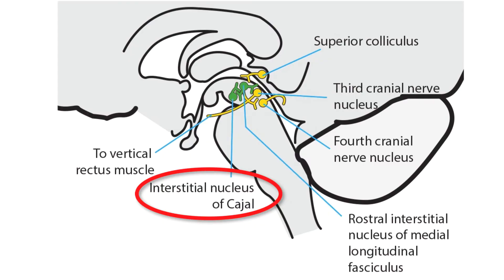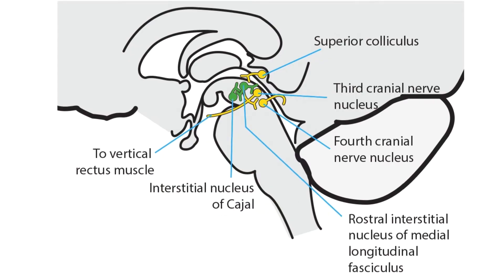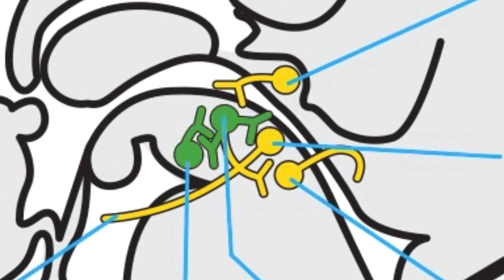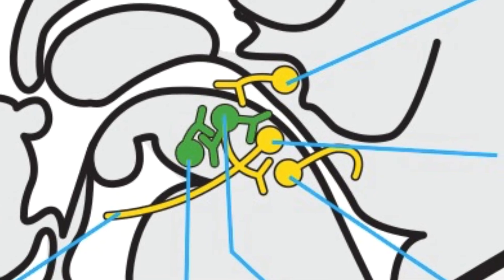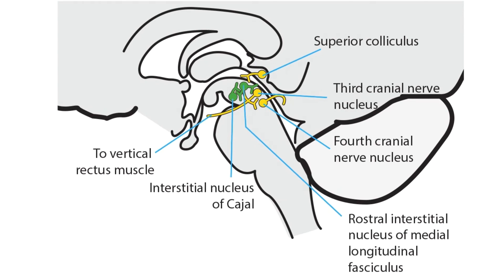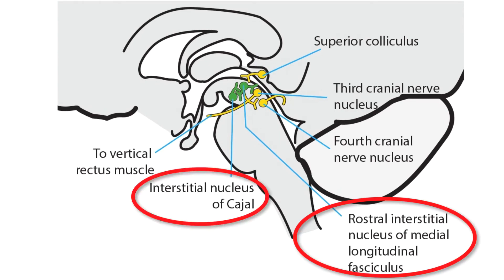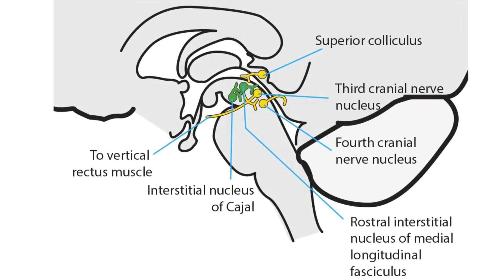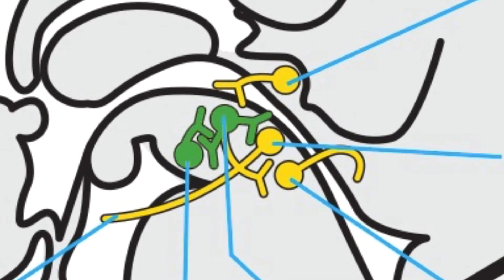Now back to the interstitial nucleus of Cajal, or INC. Just as there is a pontomedullary circuit that keeps the eyes in side gaze, there is a circuit to keep the eyes in upward or downward gaze. That circuit connects the RIMLF to the INC. The two INCs feed back through the RIMLFs to provide a sustained impulse that maintains vertically eccentric gaze.